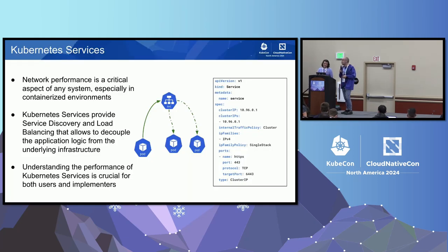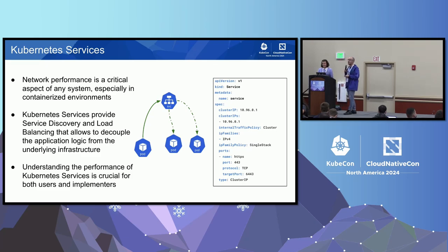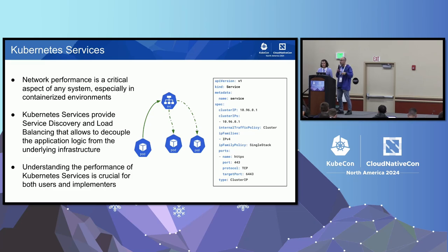I'm not going to explain much — everybody here knows what services are. But the important thing about services is I want to call them the magic that connects all the applications. You do kubectl apply, and a lot of pods are created, a lot of applications are created, and they somehow are able to communicate with each other.